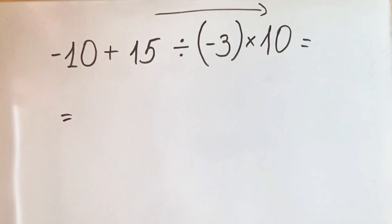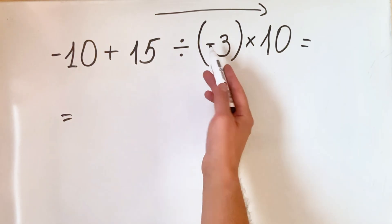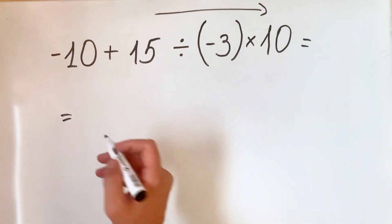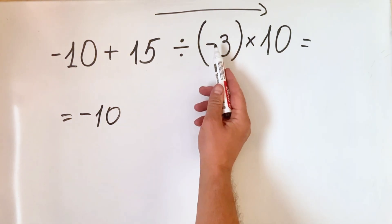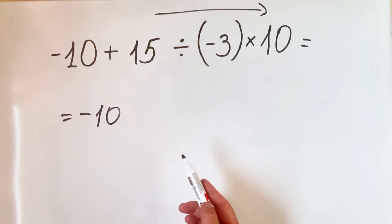So what I suggest you when you have such an equation, if you have some difficulties or the negative sign scares you out, what I always do—you have the right when you have division or multiplication to put it before the entire expression.